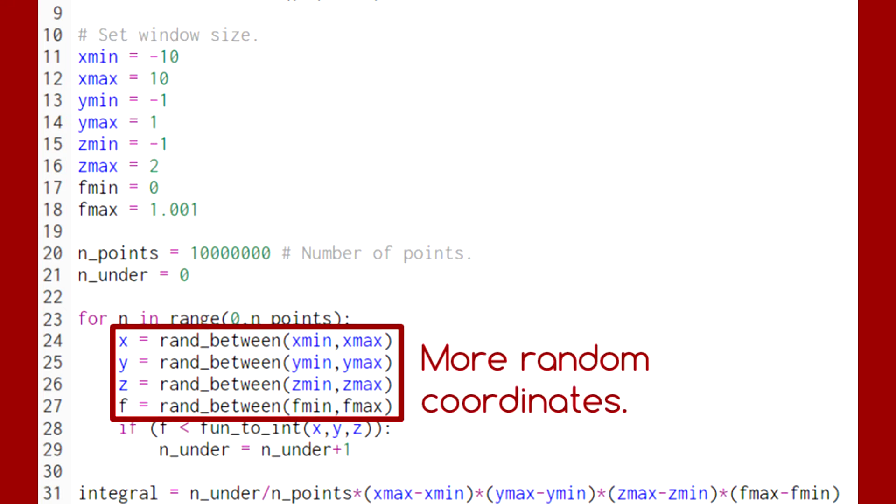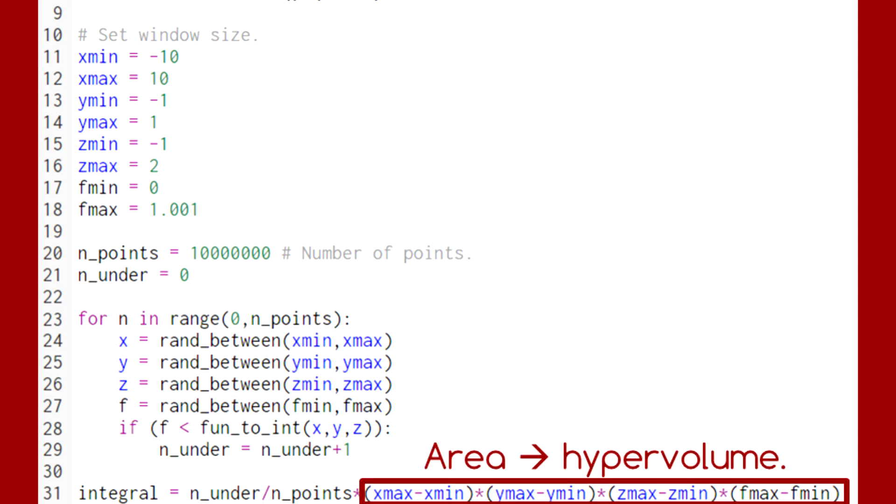Instead of implementing additional loops like with the Riemann sum, we simply select additional random coordinates and modify the calculation of the integral. This absence of loops within loops makes it more efficient to extend the Monte Carlo method into higher dimensions.